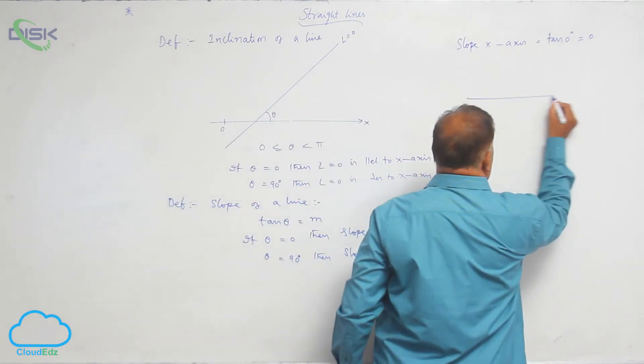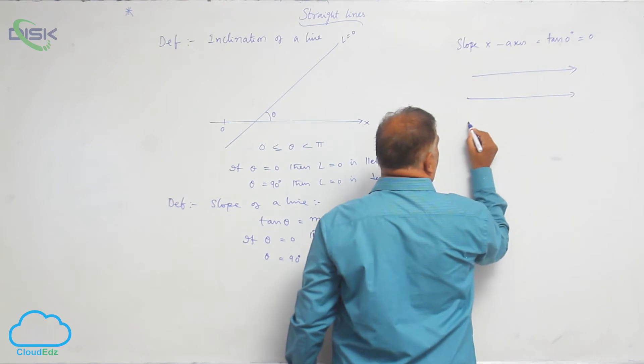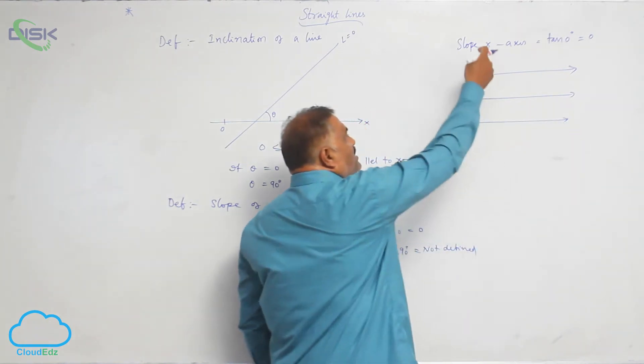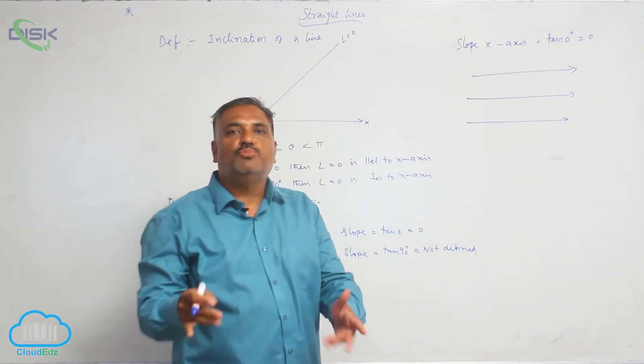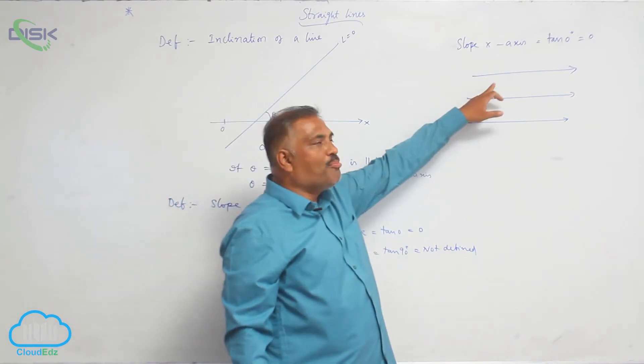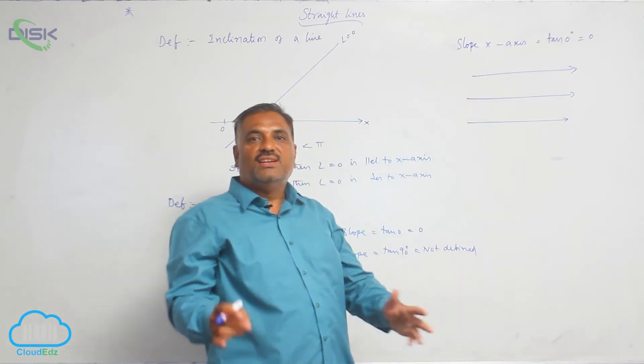If you take this is x-axis, a line parallel to like this above or below, all such lines will have same slope 0. So we can conclude slope of horizontal line is always 0.